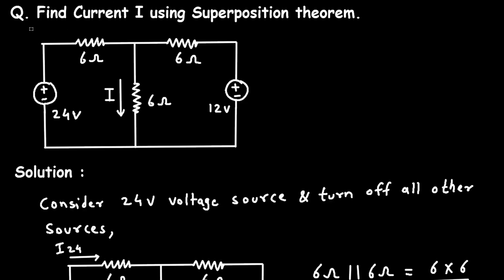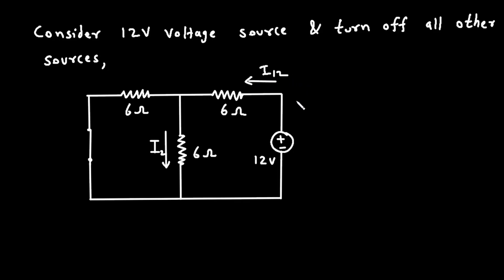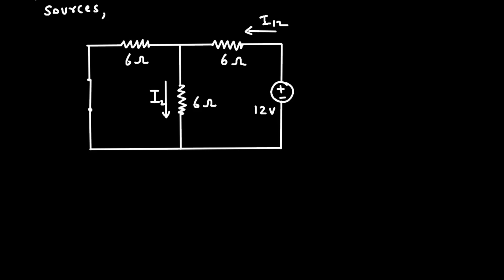Now let's copy the circuit again. This time we will turn off the 24 volt voltage source. When we turn off a voltage source, we replace it by a short circuit. This current is now due to the 12 volt source, so let's call it I2, and the main current is I12. We have to find I2, so before that we have to find I12.